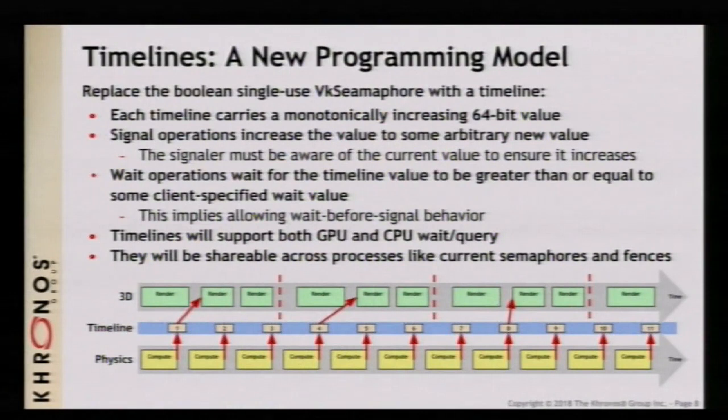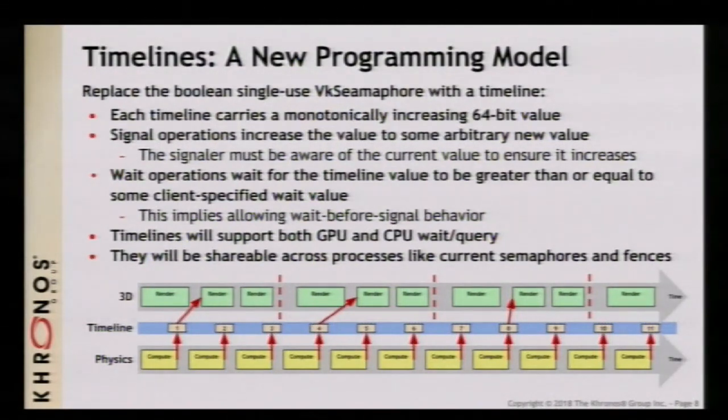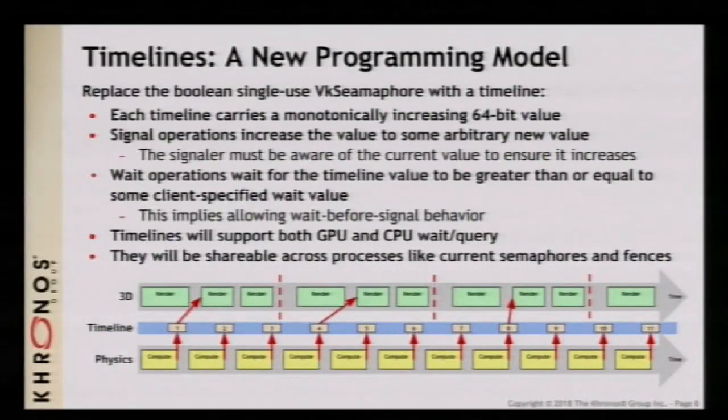The idea behind timelines is that instead of having this internally one-shot semaphore that gets swapped out and reset, each timeline carries along with it an incrementing 64-bit value. Everything starts off at zero, and when you signal the semaphore, it increases that counter to some other 64-bit value. The new value is chosen by whoever signals it, so you don't necessarily have to go 0, 1, 2, 3, 4 — you can go 0, 5, 7, 13. The signaler is required to ensure the value actually increases every time.